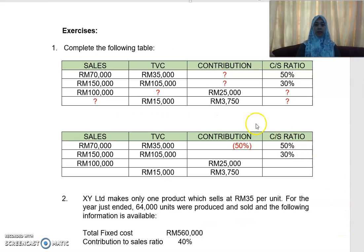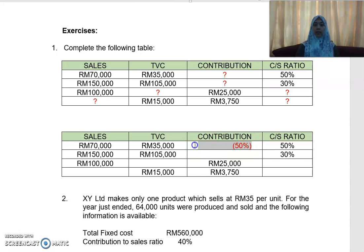To complete the table, let's look at number one. You are given sales of RM70,000 and total variable cost of RM35,000. You need to work out the contribution. Sales minus total variable cost gives you your contribution. The CS ratio is also 50%, so contribution is 50% of RM70,000, which is RM35,000. You can verify: RM70,000 minus RM35,000 equals RM35,000 contribution.